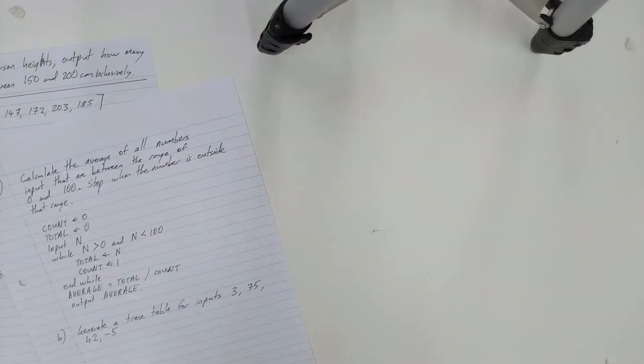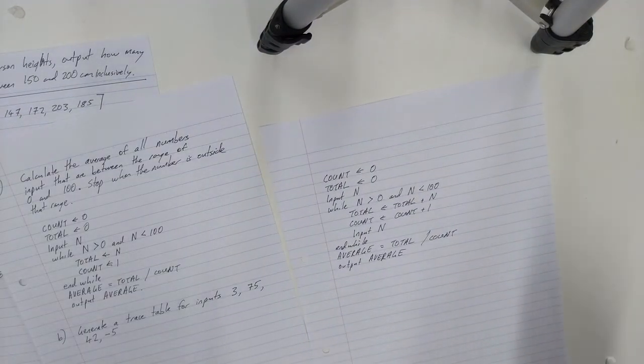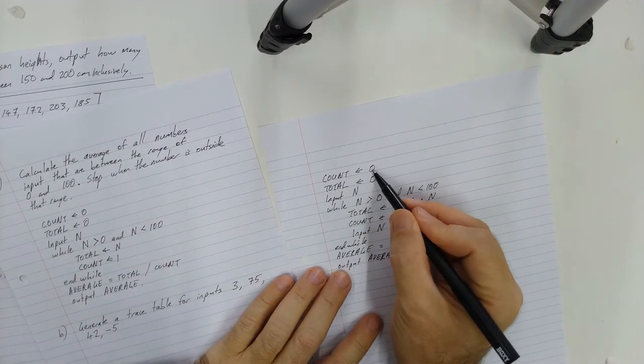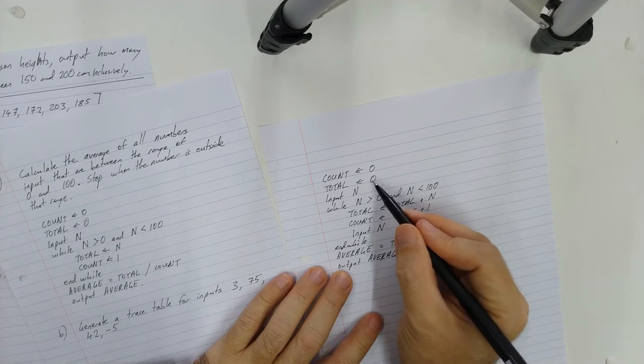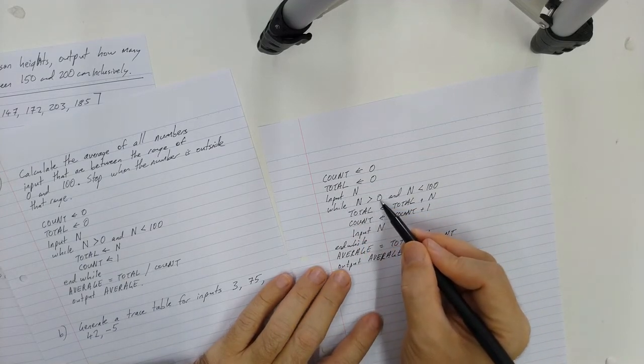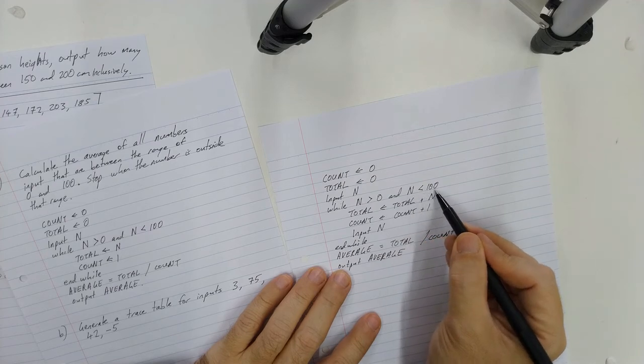So this is what I came up with as an alternative. Count has been set to 0. 0 is going into count. 0 is going into total. Input n. While n is greater than 0 and n is less than 100.